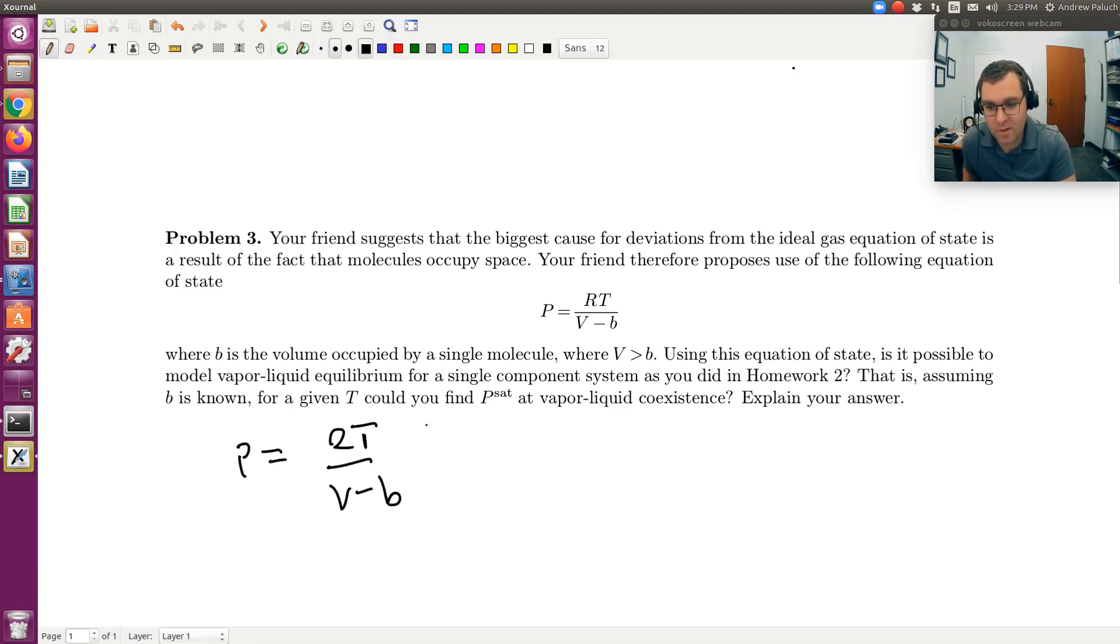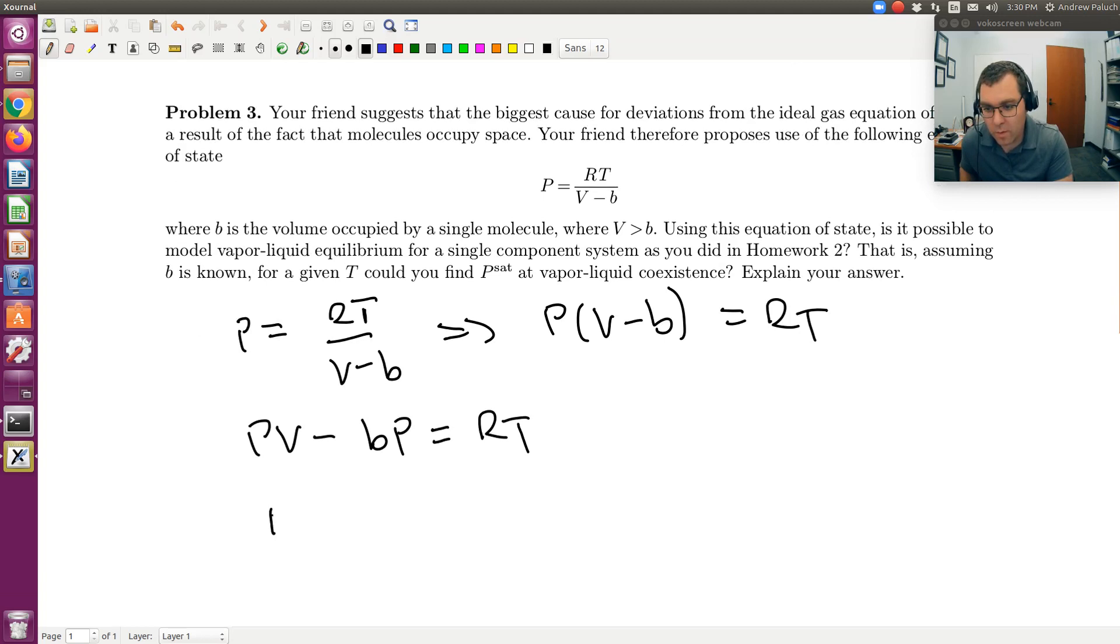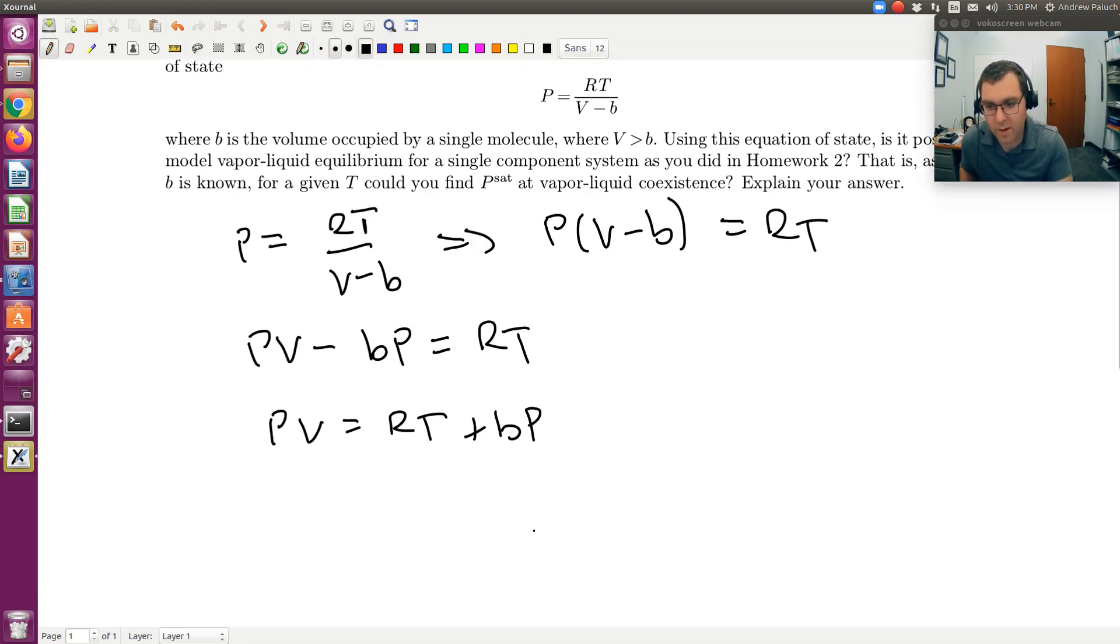I could write this as P times V minus B is equal to RT. So PV minus BP is equal to RT. So PV is equal to RT plus BP. Or finally, V is going to be equal to RT over P plus B, right?